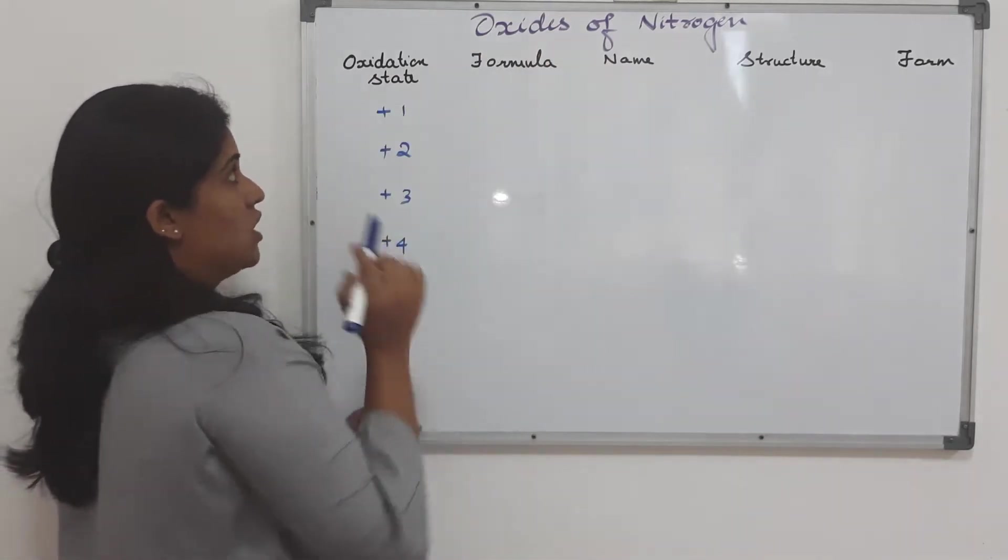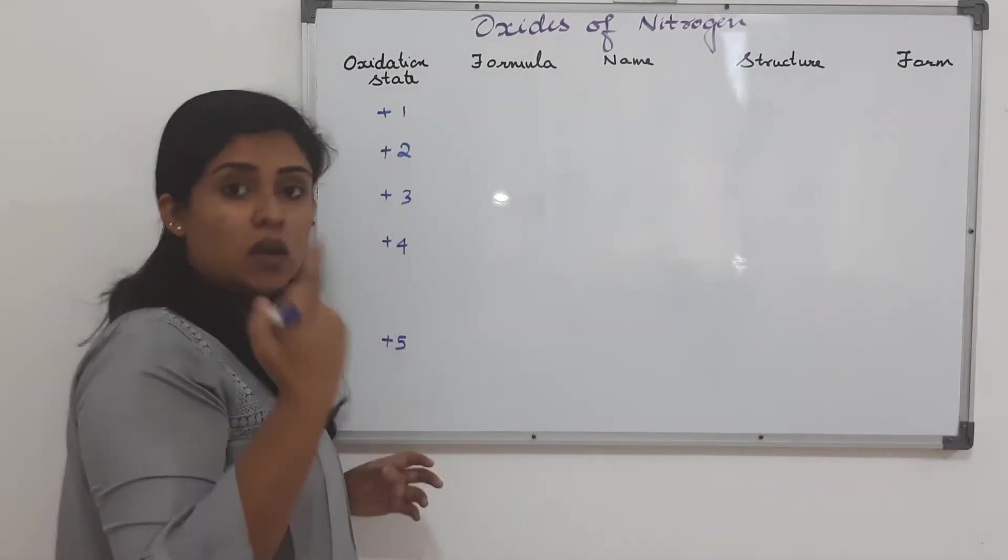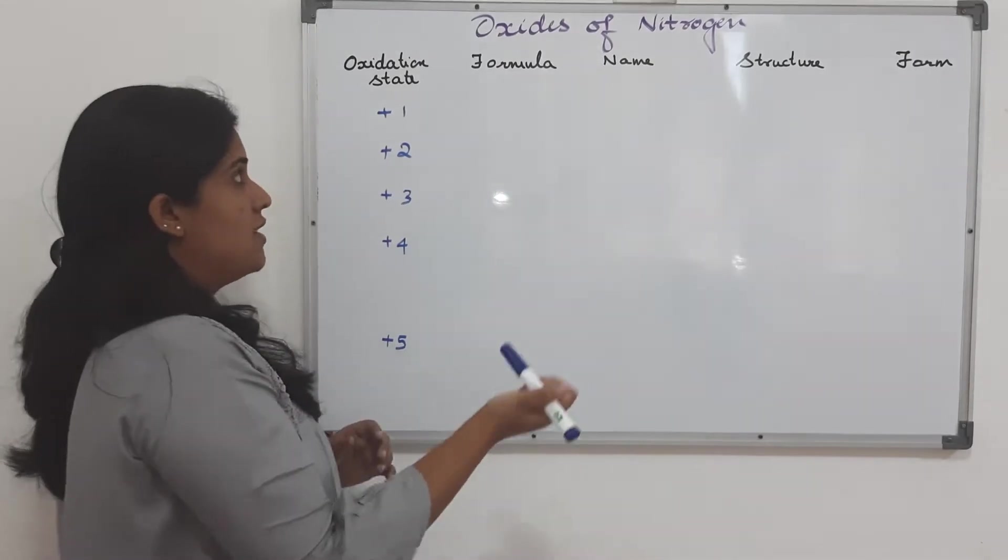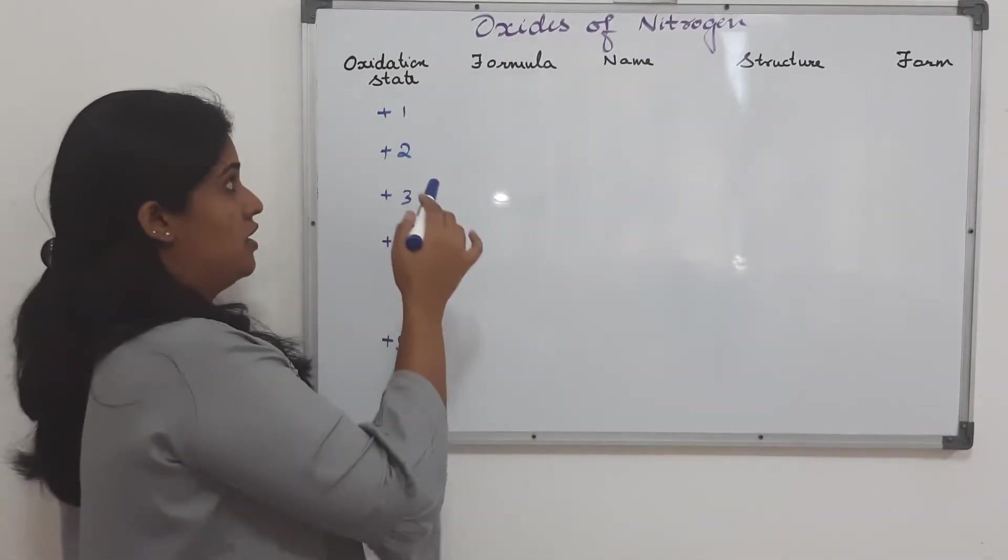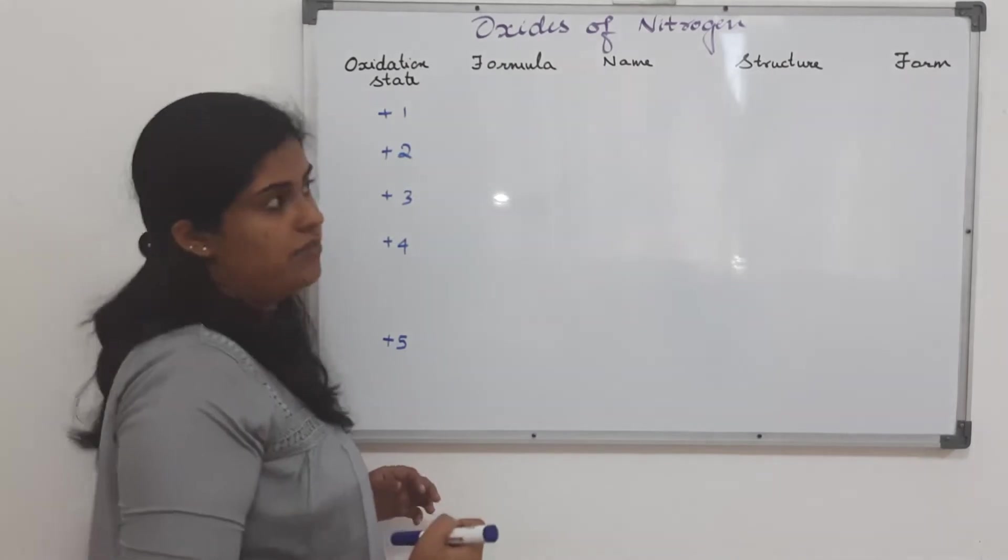For writing the oxides of nitrogen we first write all the possible oxidation states. Nitrogen oxides can have oxidation states or oxidation numbers plus 1, plus 2, plus 3, plus 4 and plus 5.